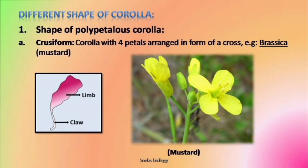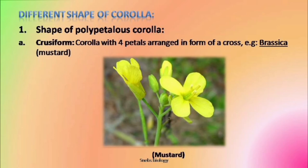First, we will discuss different forms of polypetalous corolla. The first one is known as cruciform corolla, which is a characteristic feature of the Cruciferae family or Brassicaceae family. In this, the number of petals is four. Each petal has two parts: a narrow part known as the claw and a broader part known as the limb, and these two parts are arranged at right angles to each other. Four petals are arranged in the form of a Greek cross.